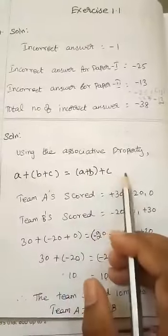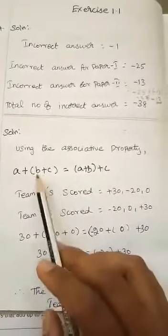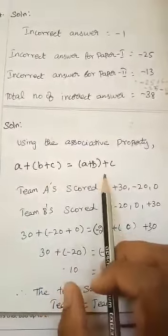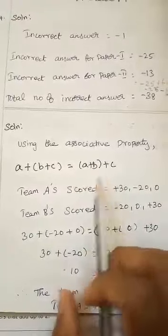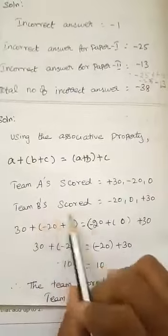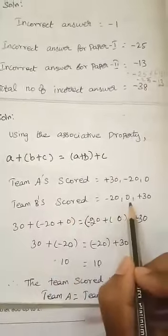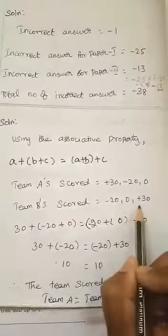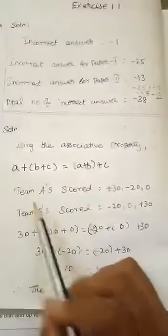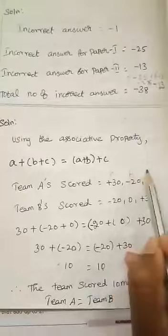Now, we are going to using the associative property. A plus B plus C is equal to A plus B plus C. This is the associative property. Team A scored 30, minus 20, 0. Team B scored minus 20, 0, 30. We are going to apply the score in the associative property. Consider this one is A, B, C. Consider this one is A, B, C.